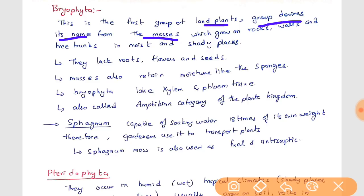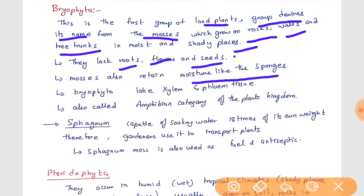Bryophyta mosses grow on rocks, walls, and tree trunks in moist and shady places. You can see them in subtropical forests, in Kerala, or in northeastern states, where during monsoon season the rocks, walls, and tree trunks are covered by these mosses. This group falls under bryophyta. They lack roots, flowers, and seeds, and mosses retain moisture like sponges.